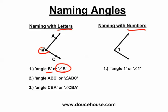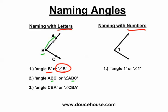Sometimes naming an angle using just the vertex isn't quite possible, and I'll show you why on the next slide. You can also use the three points that help create the angle to name it, but keep in mind the vertex always has to be in the middle. I tell my students to trace your fingers from the points that help create the angle — start at point A, trace from A to B, and then from B to C.